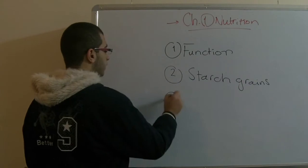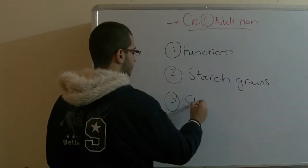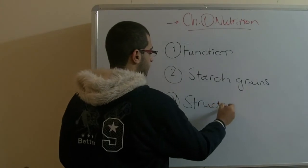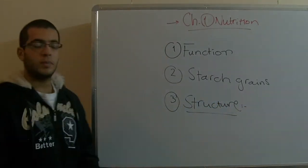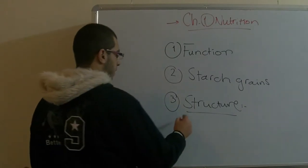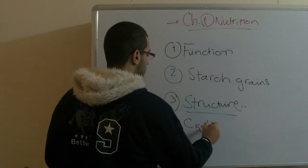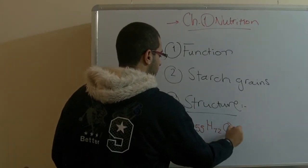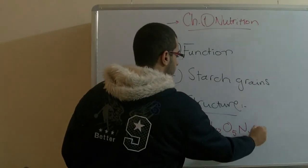The third point is the structure of the chlorophyll. The chlorophyll is said to be complex because the structure of the chlorophyll molecule is C55, H72, O5, N4, and Mg.